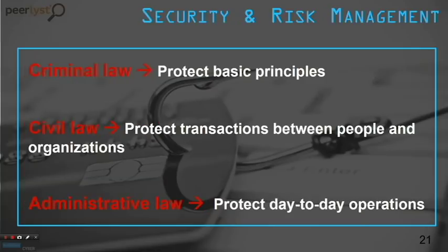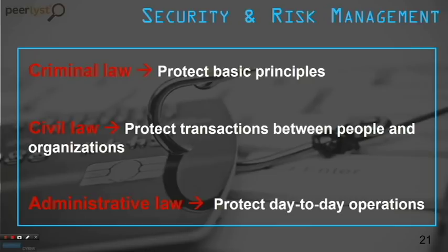The CISSP also addresses different types of law. Criminal law protects basic principles. Civil law protects transactions between people and organizations. Administrative law protects day-to-day operations. You may have exam questions about which type of law to apply, so make sure to find good examples of the different applications.